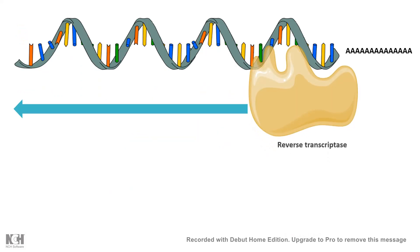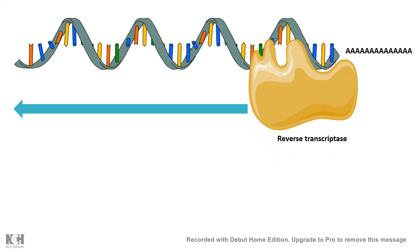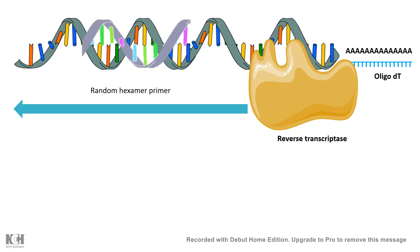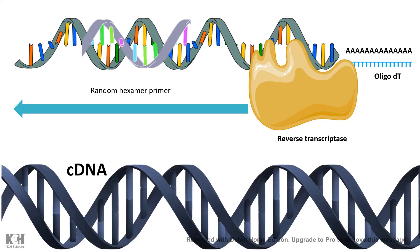Finally, reverse transcriptase is an RNA-dependent DNA polymerase - it reverse transcribes RNA. It generally uses a random hexamer primer or an oligo-dT primer to synthesize a complementary DNA strand. Reverse transcriptase is super important for creating complementary DNA and is a critical component in the workflow of transcriptomics.